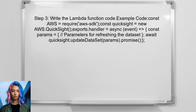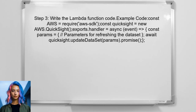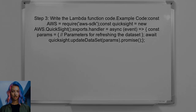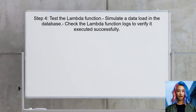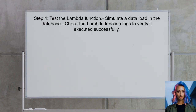Now, write the code for the Lambda function. This code will call the QuickSight API to refresh the dataset whenever new data is detected. After writing the code, test the Lambda function to ensure it triggers correctly when new data is added. This can be done by simulating a data load.